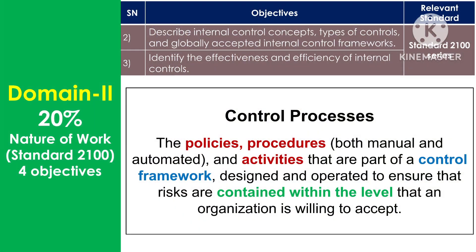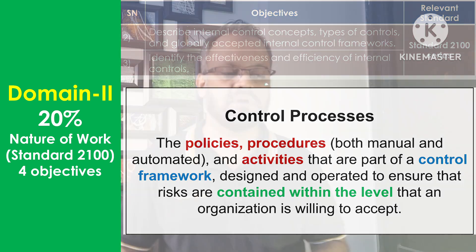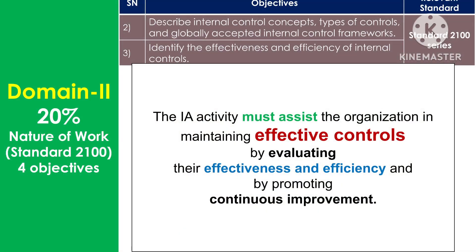Now let's look at the definition of control processes: the policies, procedures — both manual and automated — and activities that are part of the control framework, designed and operated to ensure that risks are contained within the level that an organization is willing to accept. The internal audit activity must assist the organization in maintaining effective controls by evaluating their effectiveness and efficiency and by promoting continuous improvement.